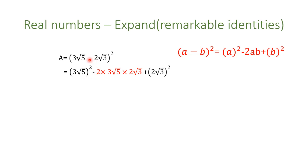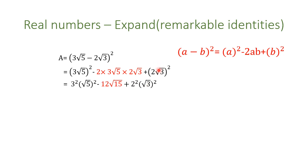So it is: minus 2 times the first one times the second one, plus the second one all squared. This square applies to both the 3 and the radical 5, and similarly here the square applies to both the 2 and the radical 3.